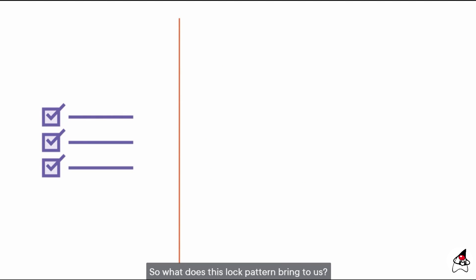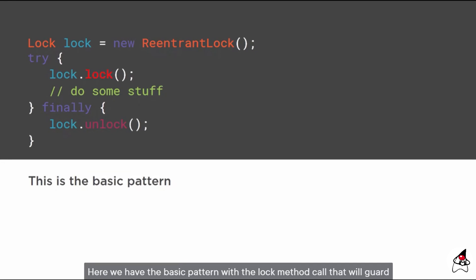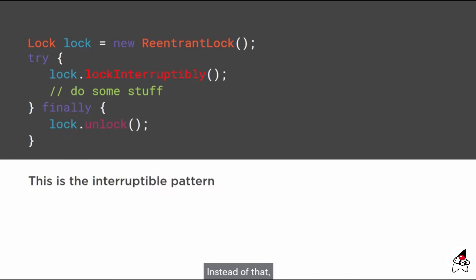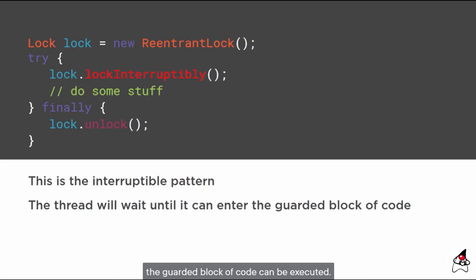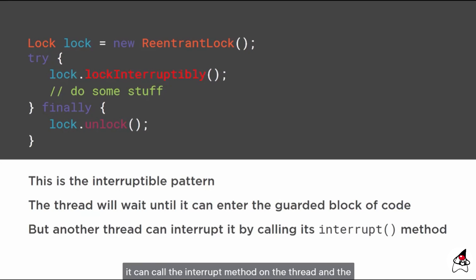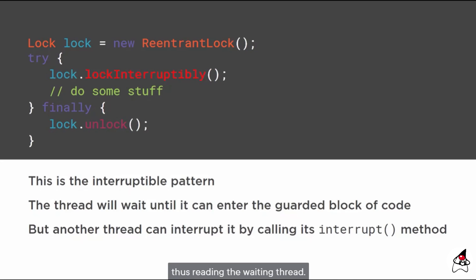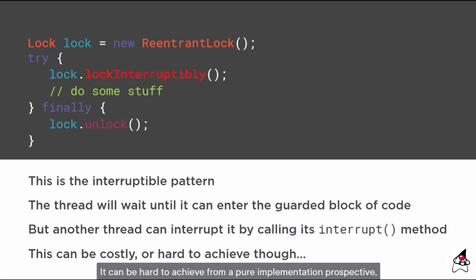The first additional feature is interruptible lock acquisition. Instead of calling the plain lock method, we can call lockInterruptibly, which has the same semantic — the thread is blocked until the guarded block can be executed. However, if another thread has a reference on it and calls the interrupt method, lockInterruptibly will throw an InterruptedException, releasing the waiting thread. This was not possible with the synchronized pattern. It can be costly to achieve, but it is available.